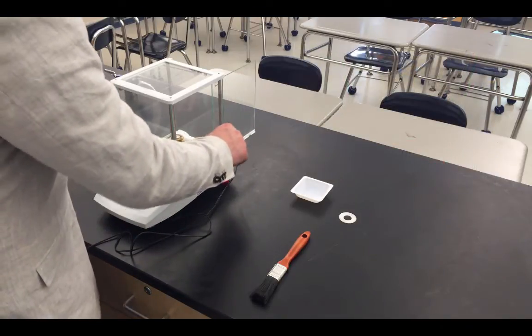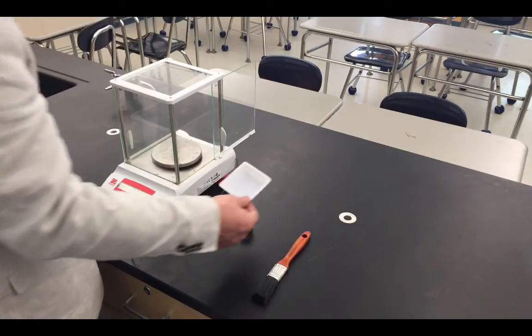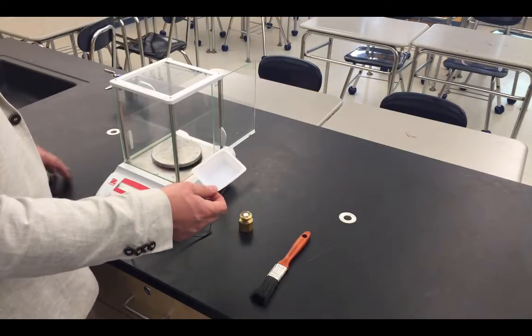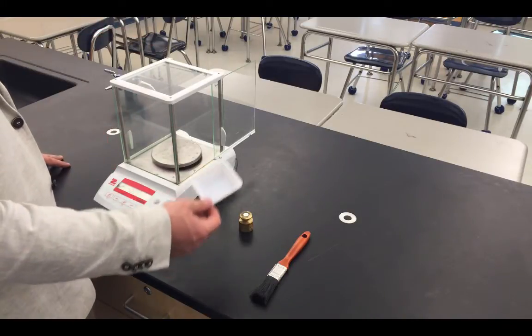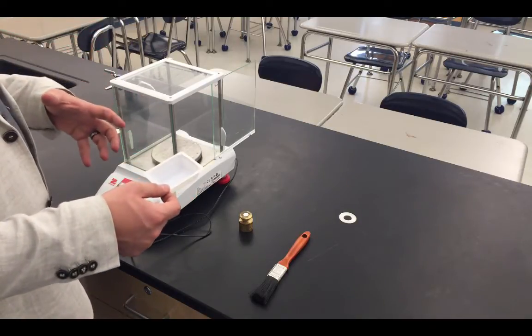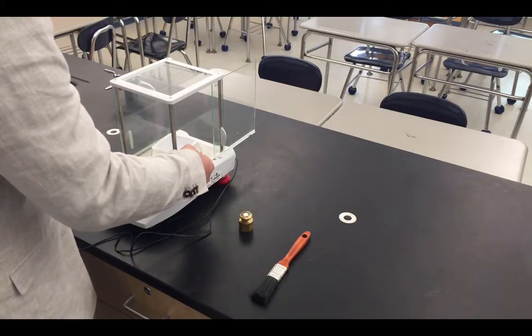If we want to record the mass of something that does not necessarily sit nicely on the balance itself, we can use something like this. This is known as a weighing dish. Now the downside of using a weighing dish is we want to know the mass of the contents of the dish, not the dish itself. In previous science classes, you might have weighed the dish separately, subtracted that mass out, and then got the mass of your items. This balance actually does a lot of that work for us.